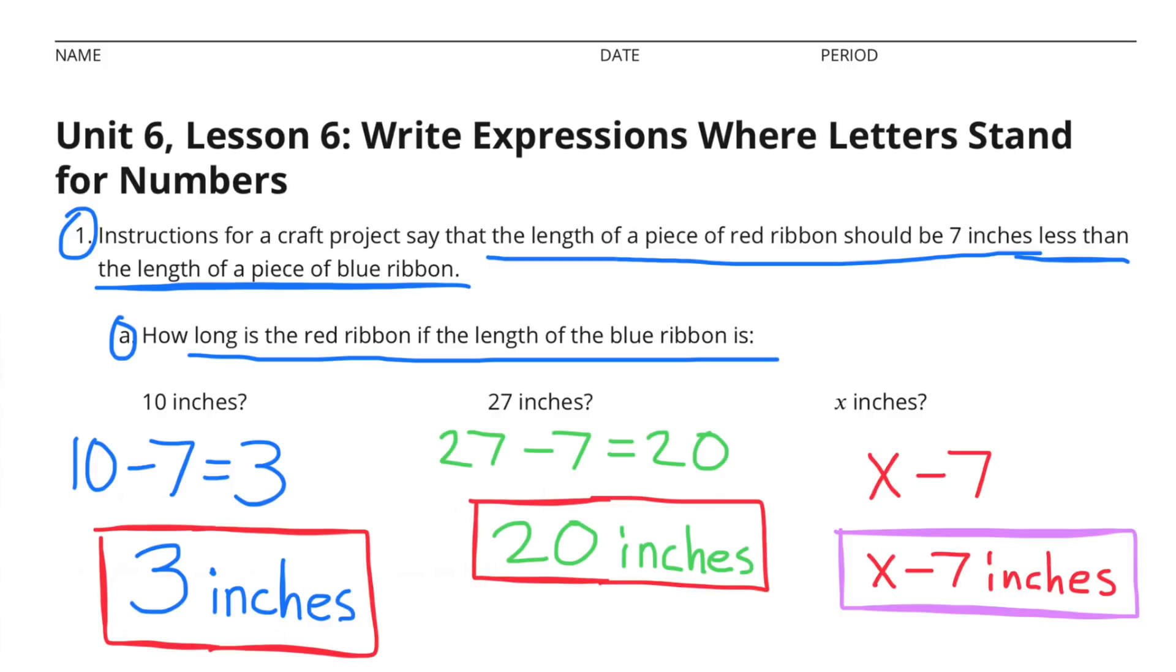27 inches. 27 inches minus 7 inches is 20 inches.